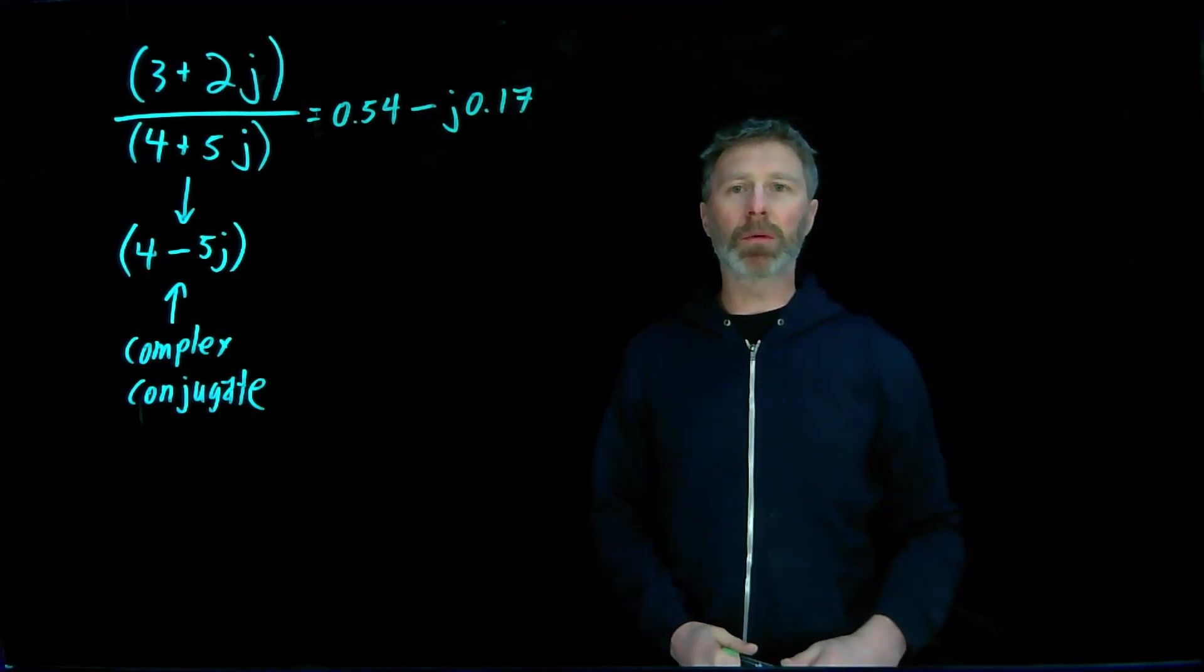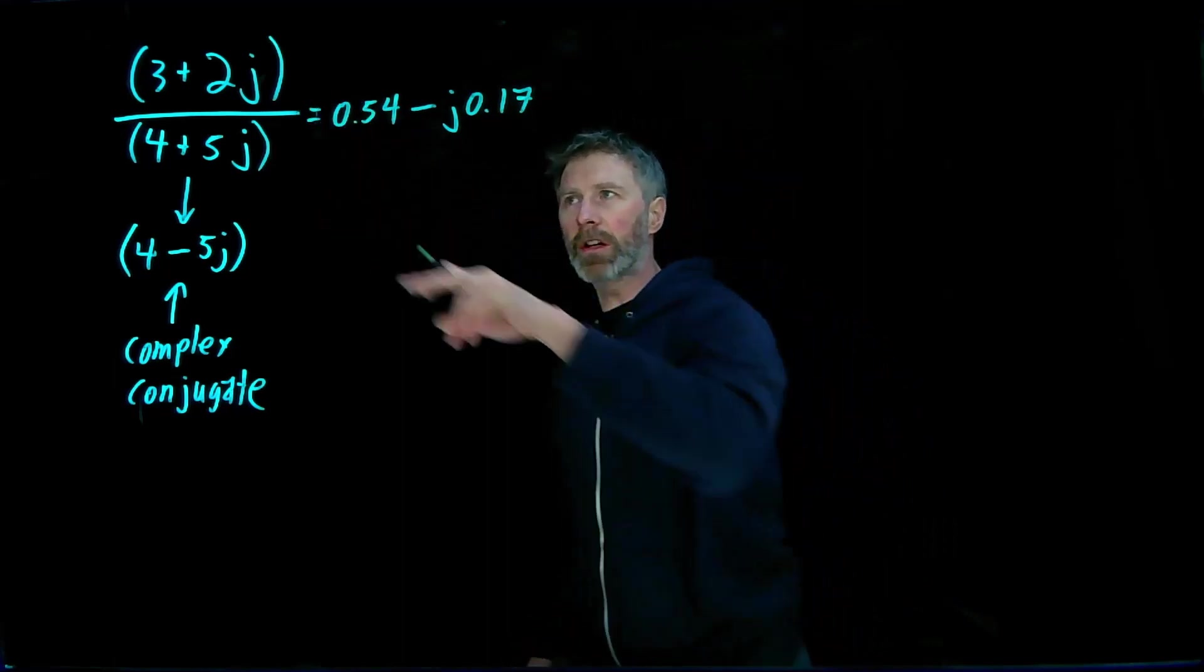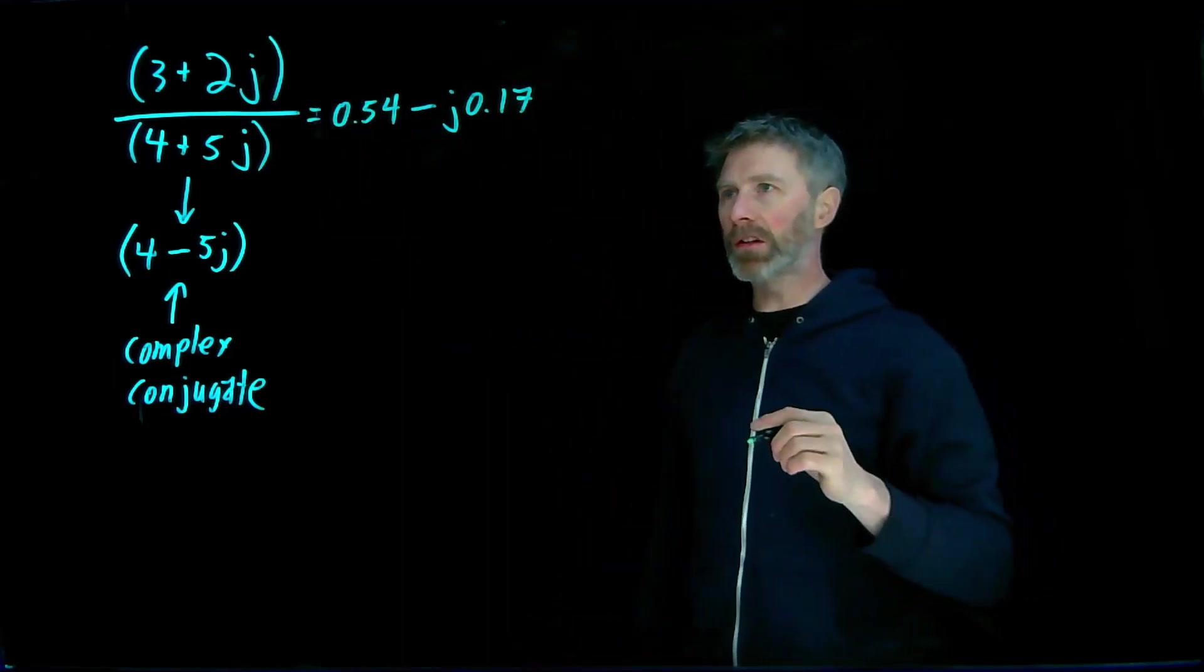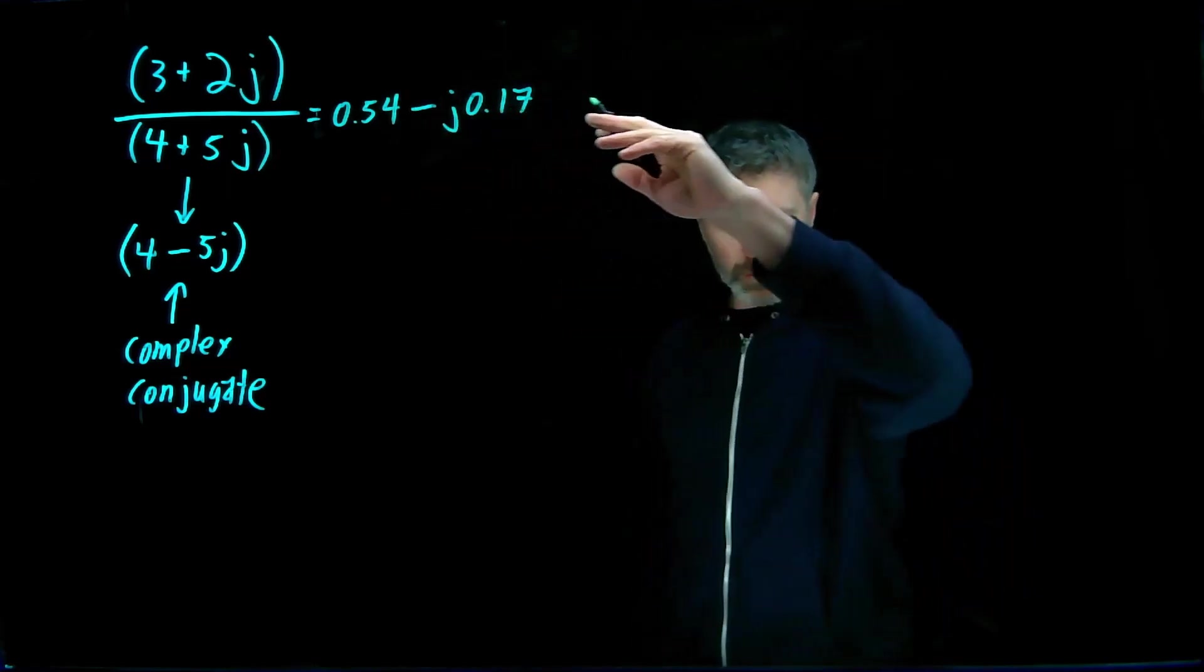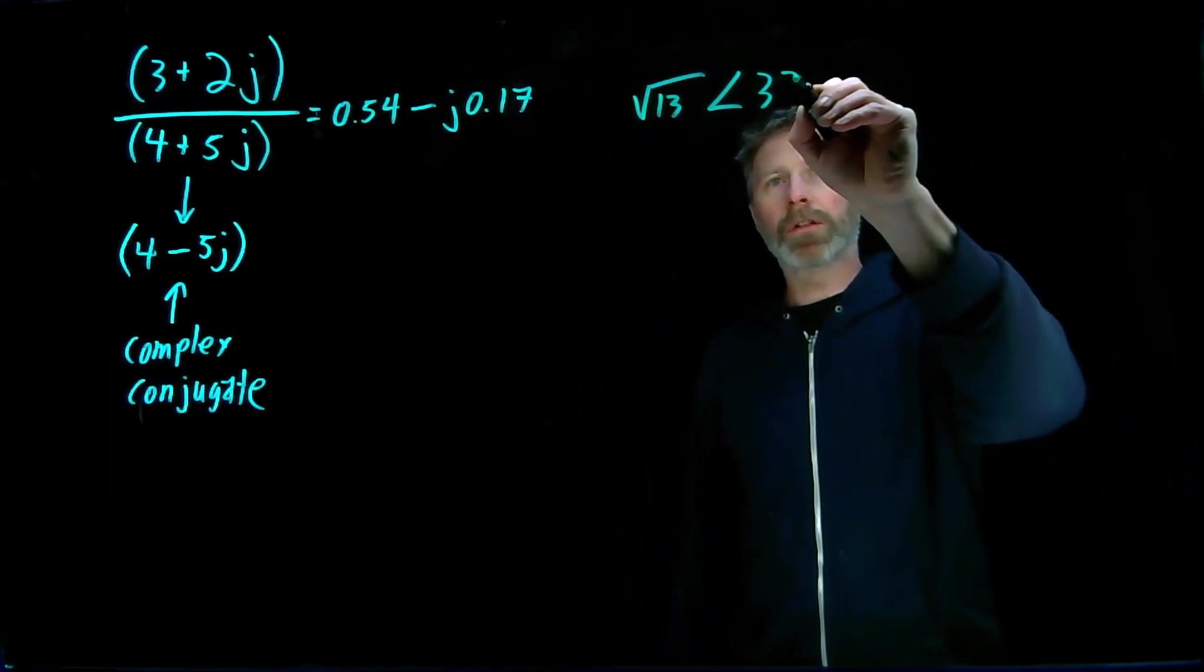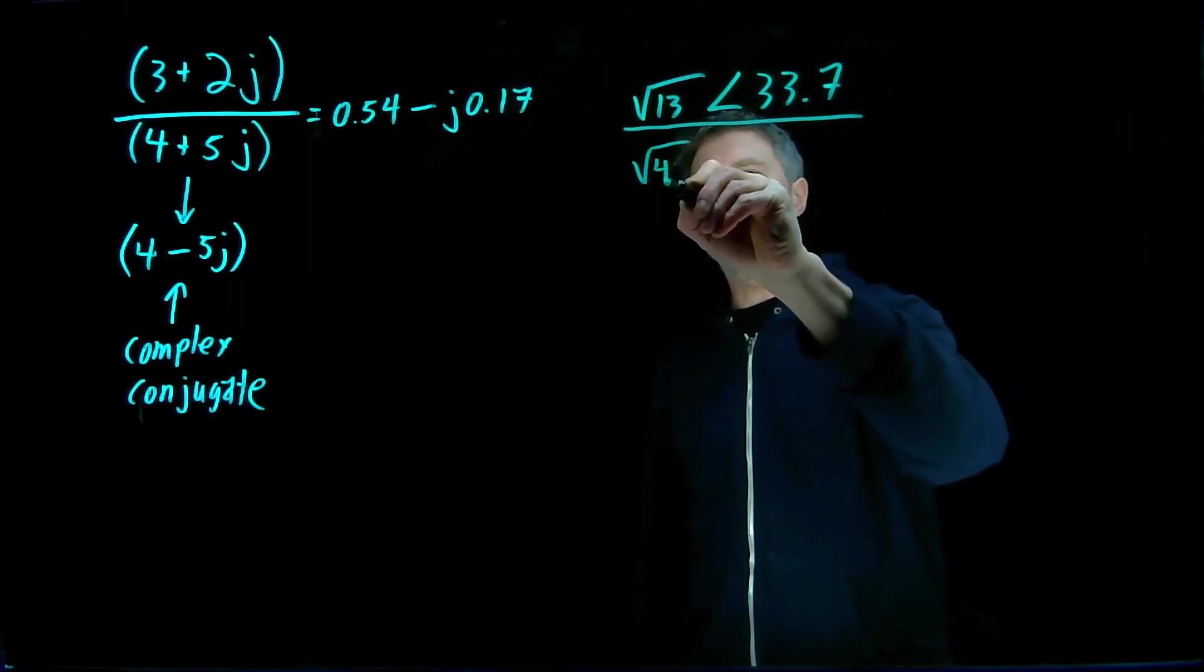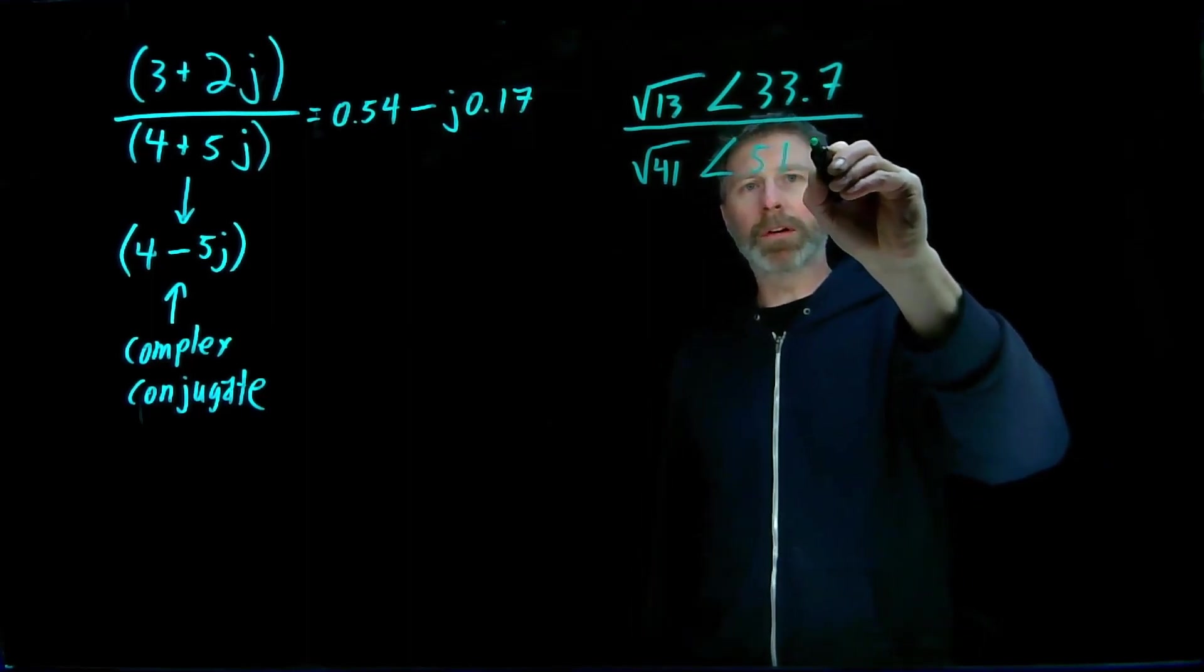It's much easier when the complex numbers are in polar notation. And so I'm going to, again, do the conversion. Well, I've done the conversion already, and I'll give it to you as an exercise to do the conversion if you want some extra practice. But 3 plus 2j is, again, root 13 with a phase angle of 33.7. And 4 plus 5j is root 41 with a phase angle of 51.3.